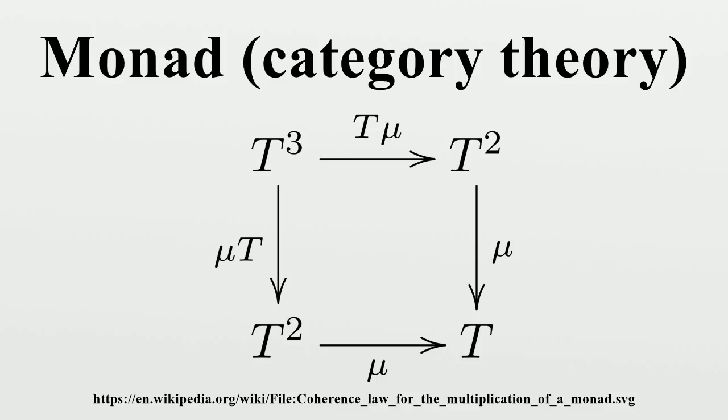The first axiom is akin to the associativity in monoids, the second axiom to the existence of an identity element. Indeed,